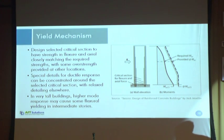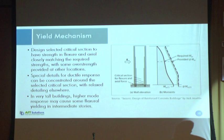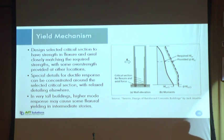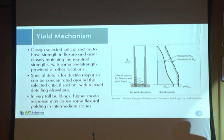This is the yielding mechanism of the cantilever shear wall. When we design the shear wall, we have to select the critical section which has a flexural strength closely matching the required strength, and then at other locations above, we provide over-strength. At the critical location, we have to provide confinement to achieve proper ductile response, and we relax the detailing in the portions above. But for high-rise buildings, higher vibration modes are significant, so the shear wall may yield at mid-height of the building. In that case, we may need to provide some confinement for ductile behavior at mid-height.